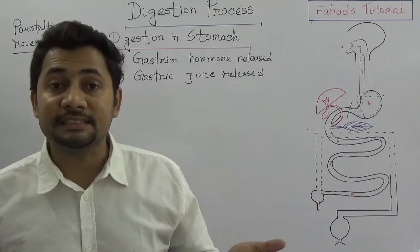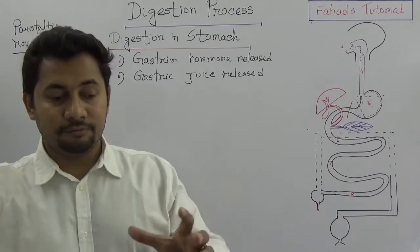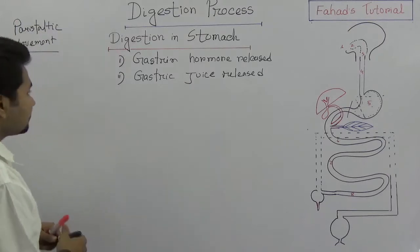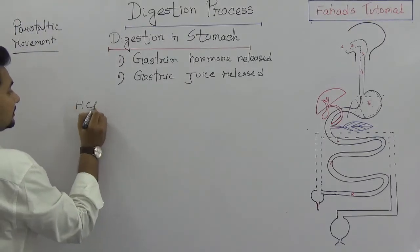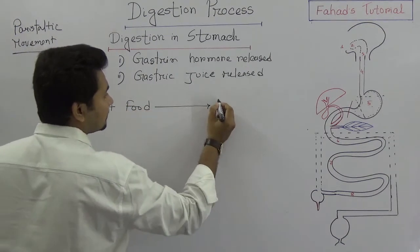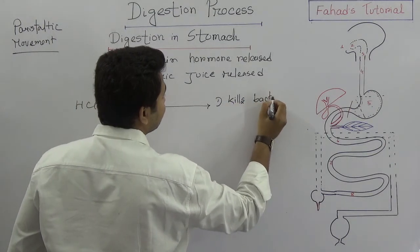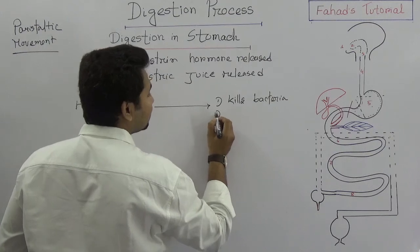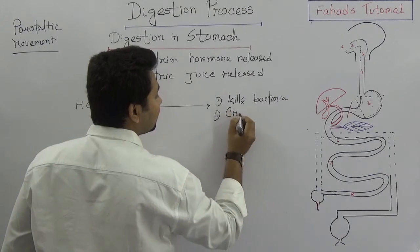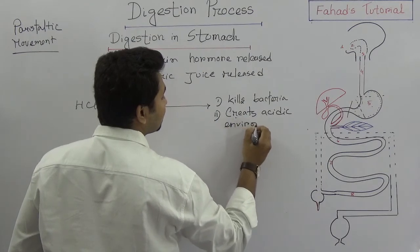When gastric juice is mixed with the food, hydrochloric acid kills the bacteria and germs in the food, and also turns the food into a thin liquid known as chyme. When HCl mixes with the food, it first kills bacteria and then creates an acidic environment inside the stomach.